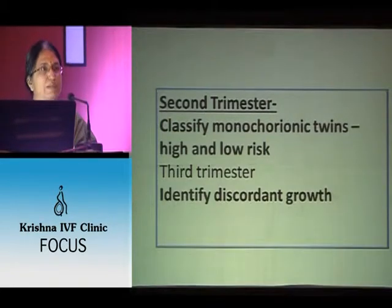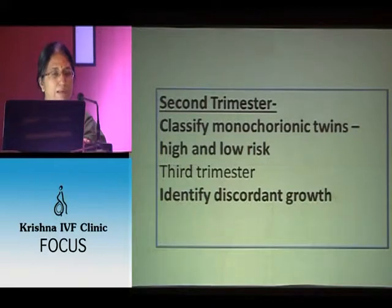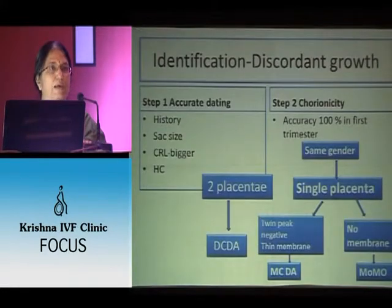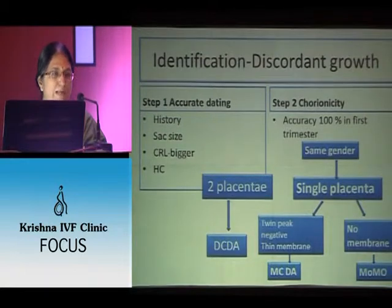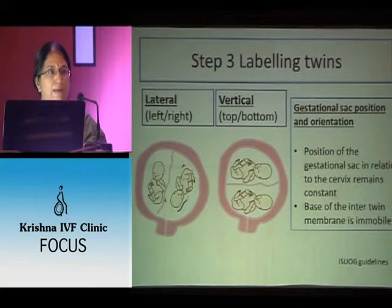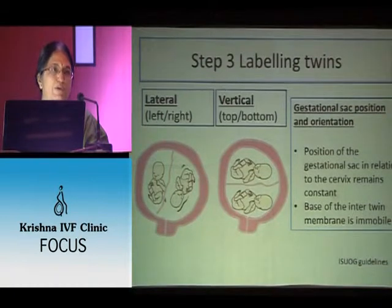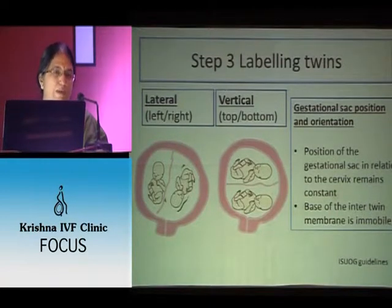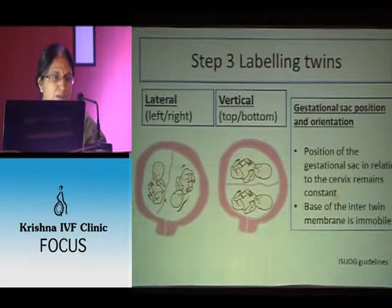The second trimester scan will classify monochorionic twins into high-risk and low-risk. Then in the third trimester we identify discordant growth. The steps are: first, accurate dating by history, sac size, and CRL of the larger twin or head circumference. Second, establishing chorionicity. Third, labeling or naming the twins — you need to know which baby you are measuring. You must label the twins so that you are consistently and reliably measuring the same twin every time she comes.